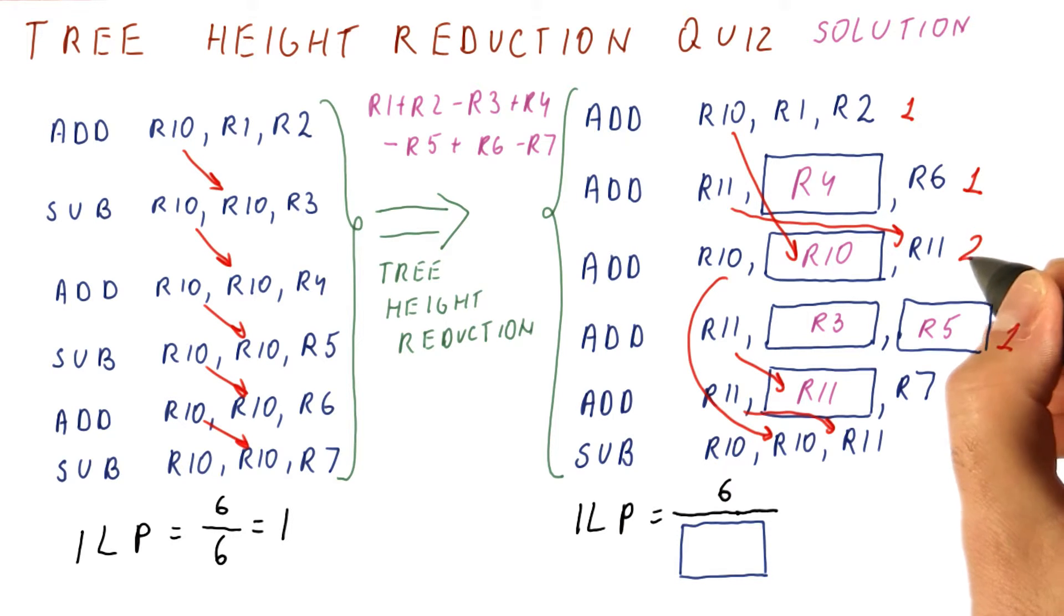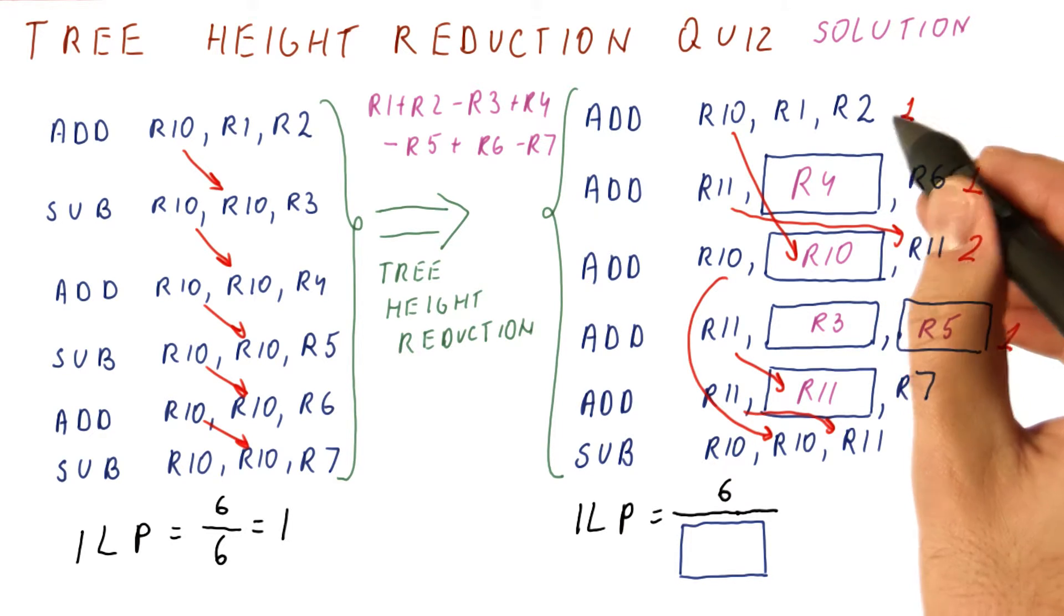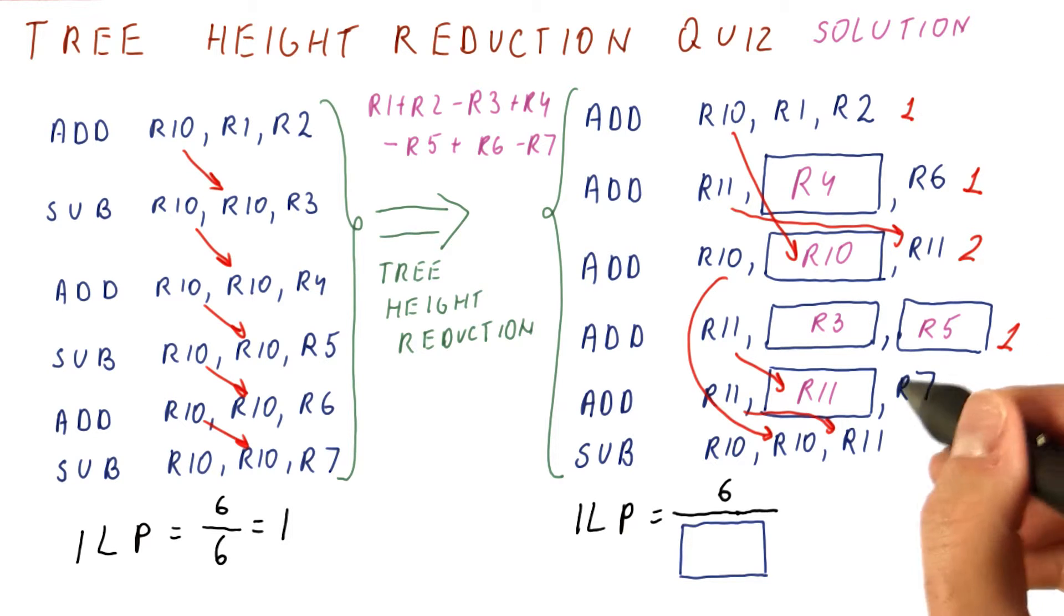In the second cycle, we can do this because these two complete in the first cycle. We can do this because it only waits for this and that's been done. And finally, in the third cycle, we have to do this because it has to wait for the results of the second cycle.